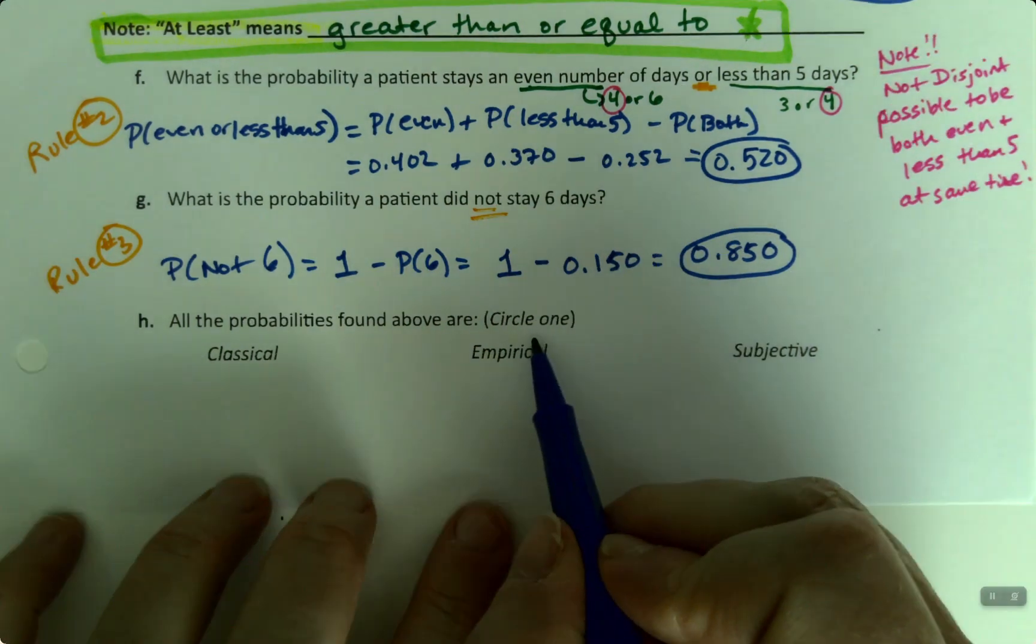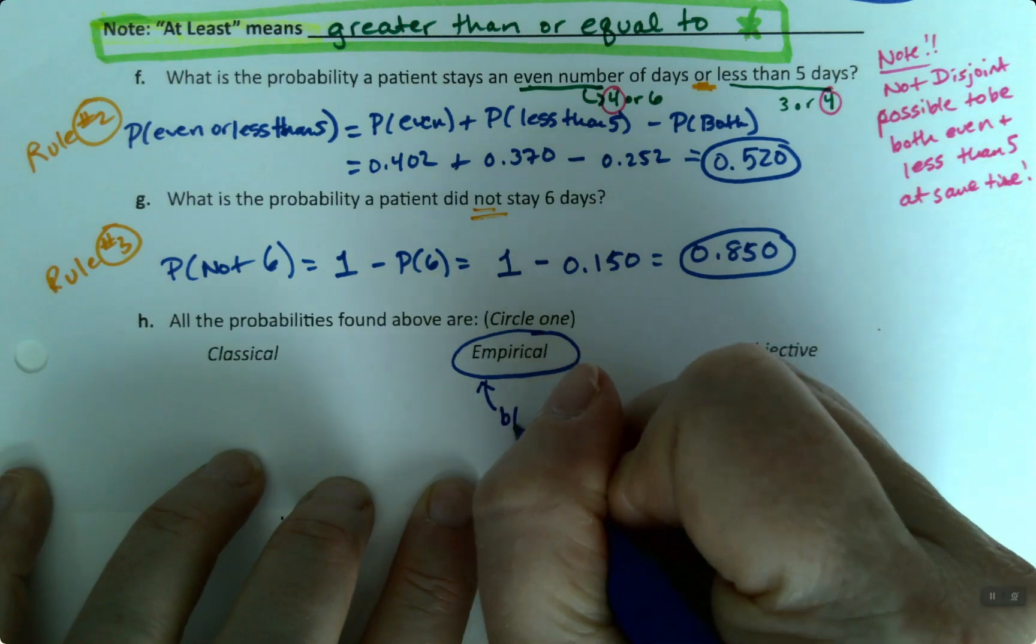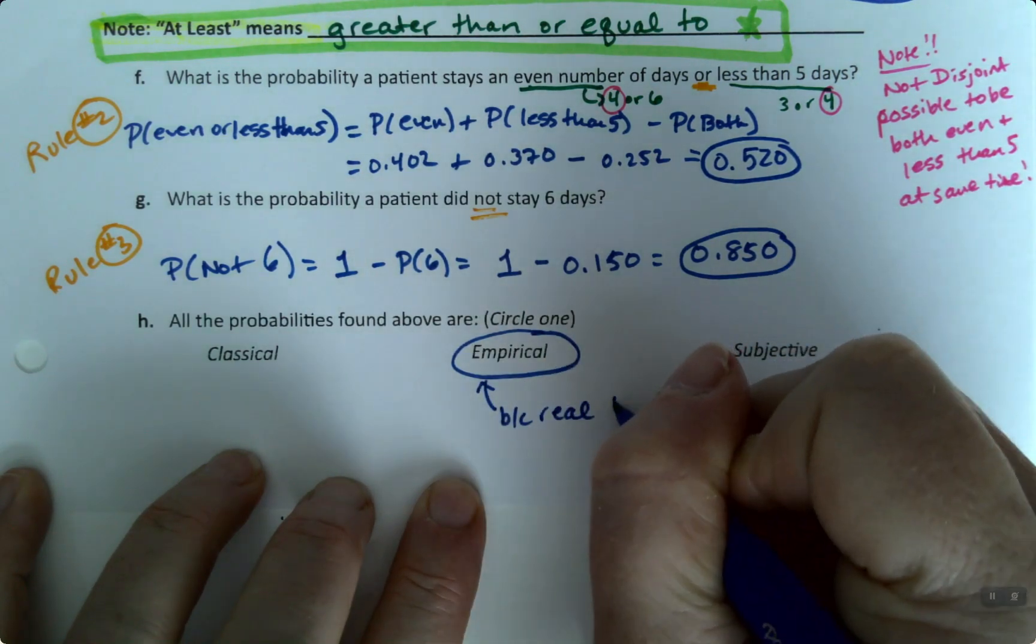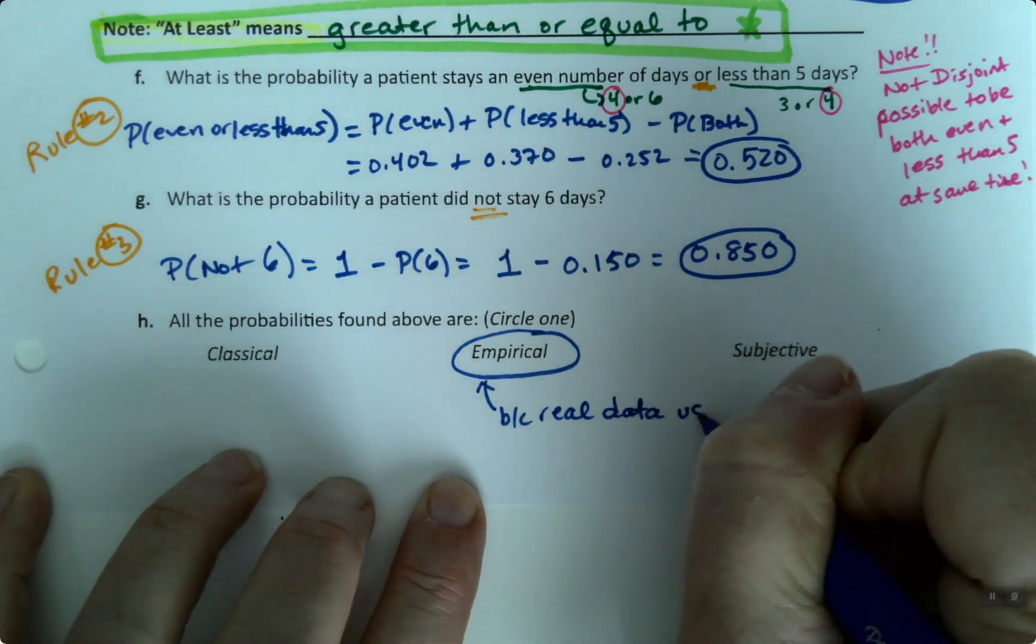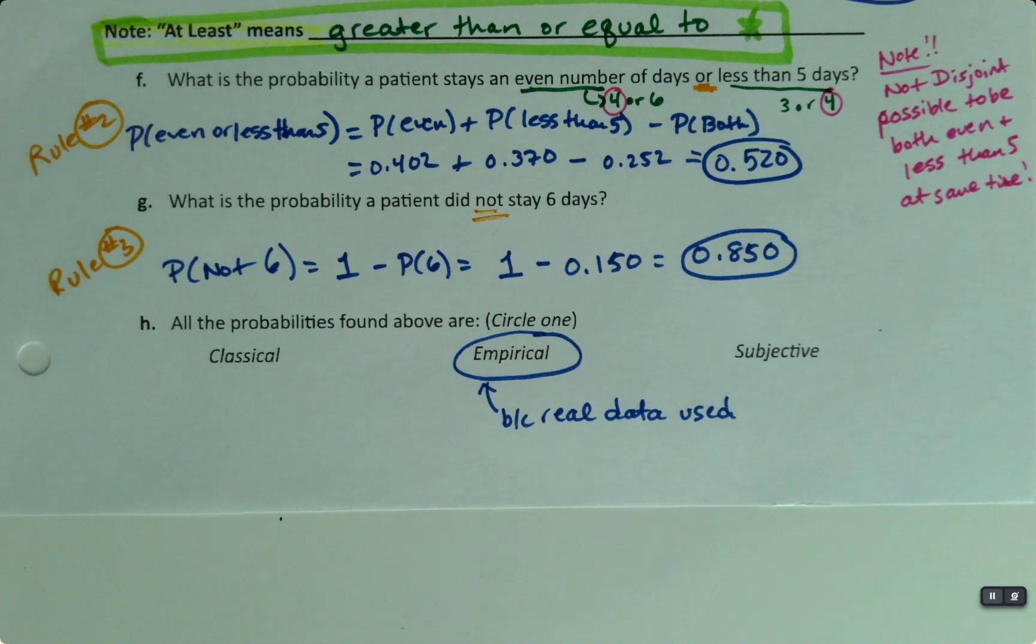All of these probabilities are empirical because they were from real data. They were tracking hospital records. And so therefore, this is real data. Therefore, this is empirical. And I realized that question wasn't there in spring of 23, but it will be there for future. So you might as well write it down.